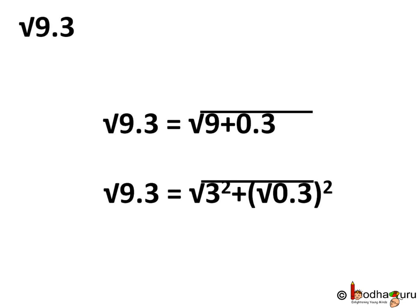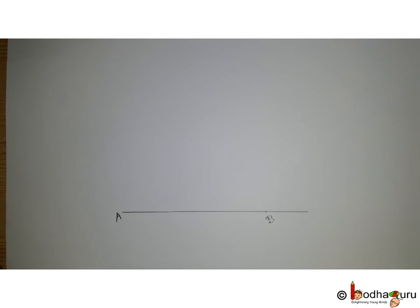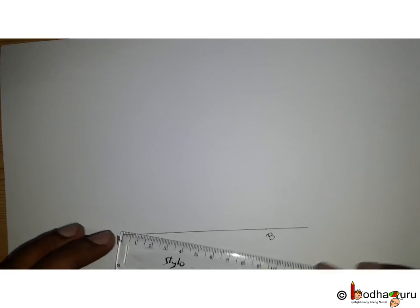There is another way to find the value of square root of a decimal number. The nearest perfect square numbers of 9.3 are 9 and 16. That is, 9 is less than 9.3 is less than 16. Now taking square root becomes 3 is less than square root of 9.3, which is less than 4.